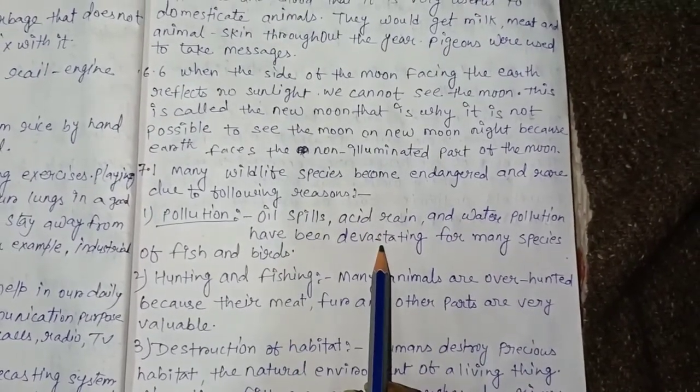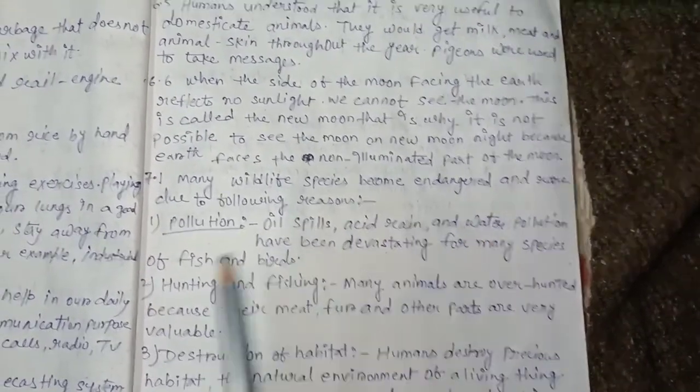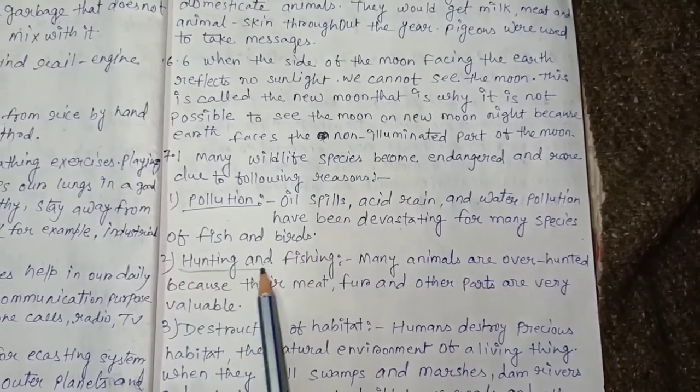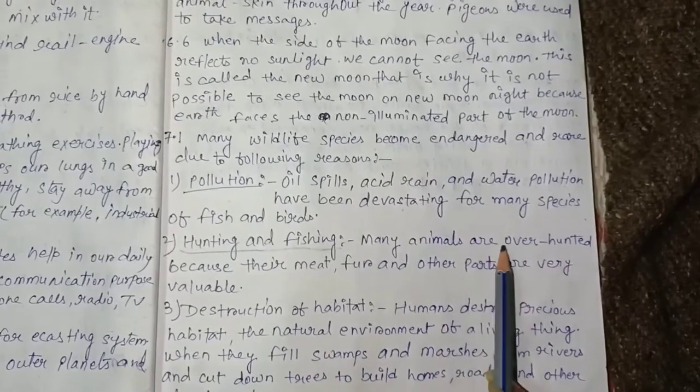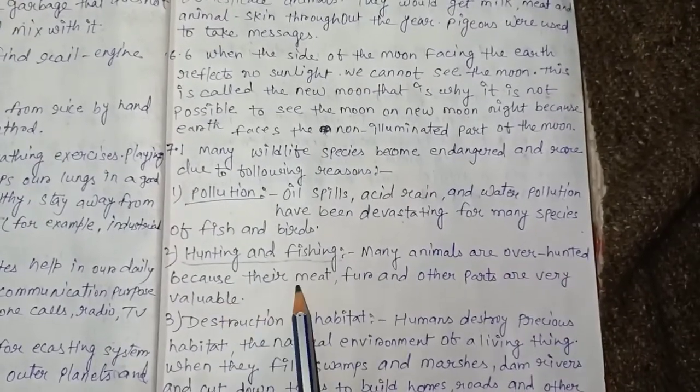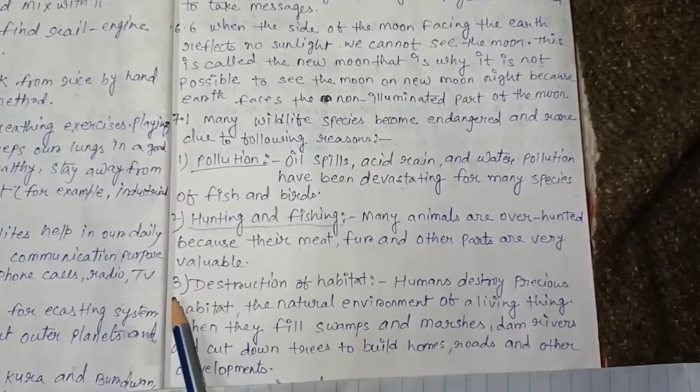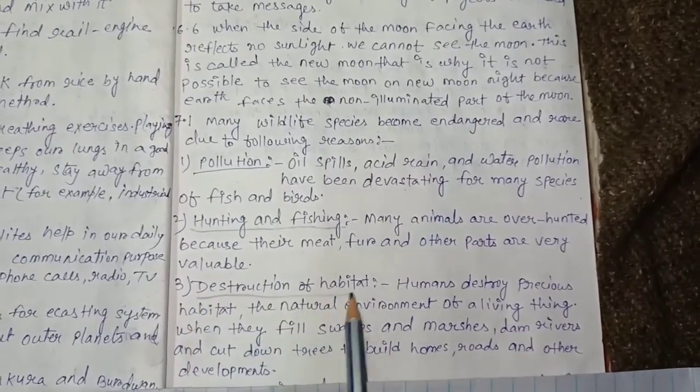Many wildlife species become endangered and rare due to the following reasons: Point 1 - Pollution: oil spills, acid rain, and water pollution have been devastating for many species of fish and birds. Point 2 - Hunting and fishing: many animals are over-hunted because their meat and other parts are very valuable.